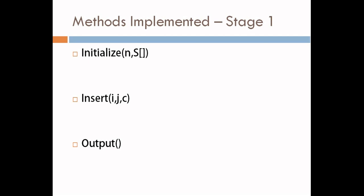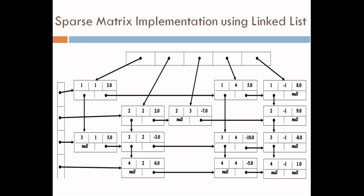Now we will see the methods implemented. The entire project is divided into three stages. For the first stage, the first method is initialize. This method initializes the sparse matrix from a given set of expressions which are inputted to the program. Using string processing, it extracts all the values and initializes the sparse matrix.